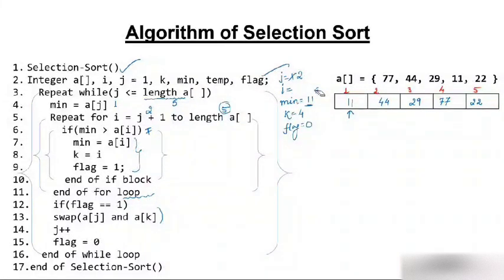Now see the beauty: 11, 22, 29, 44, and 77. We increment j to 5 and reset flag to 0. Minimum = a[5] = 77. The for loop starts at i = 6, which already exceeds 5, so condition is false immediately. Flag is 0 — we do not swap. j increments to 6.